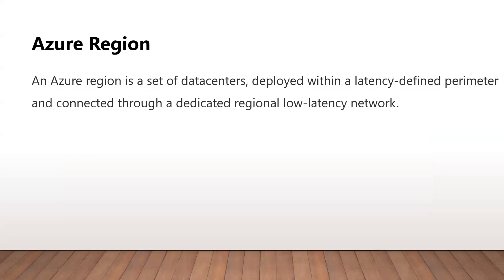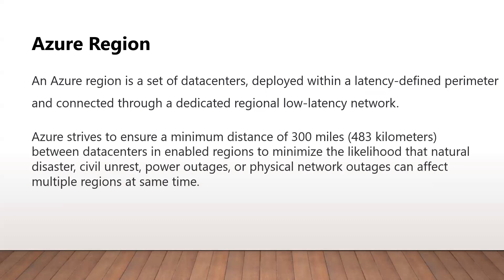Then comes Azure region, which is a group of data centers connected with a low-latency and high-throughput network. Azure tries to maintain a minimum distance of almost 480 kilometers between their data centers, so that certain events like natural disasters, power, or network outages don't impact all regions at the same time.